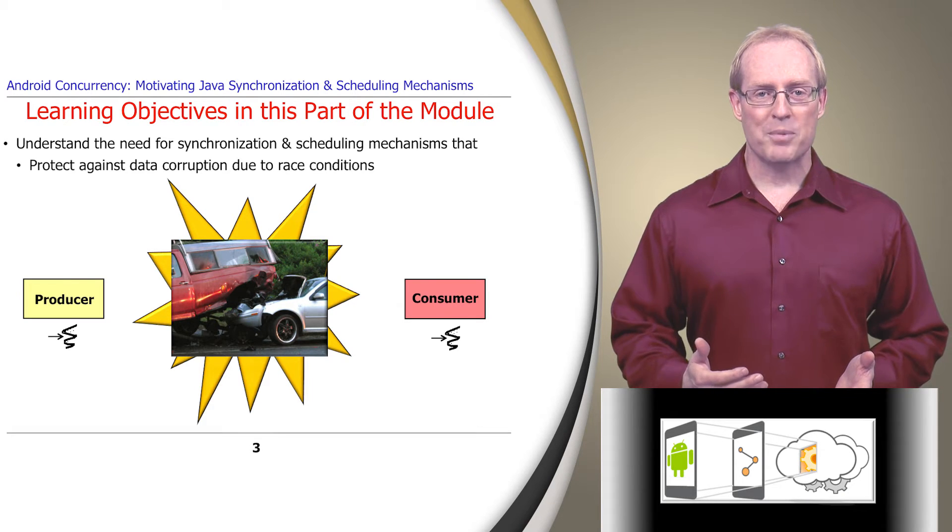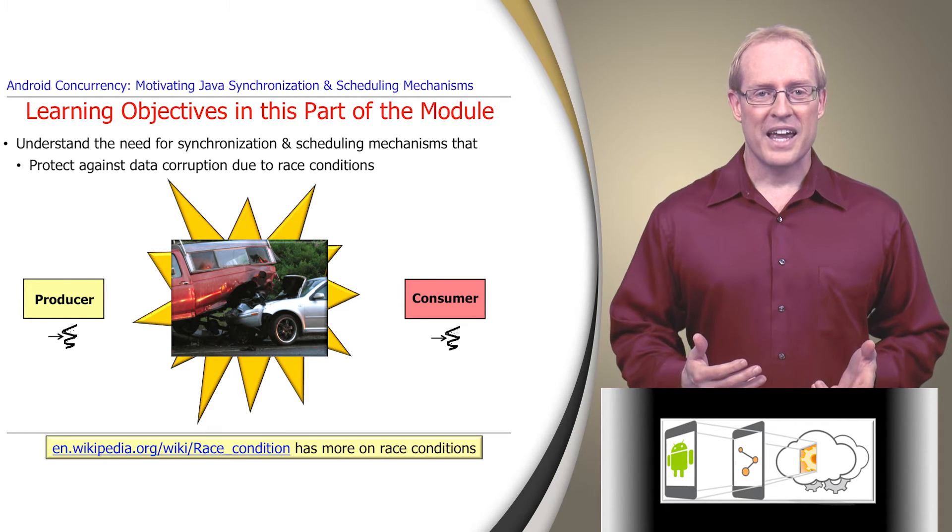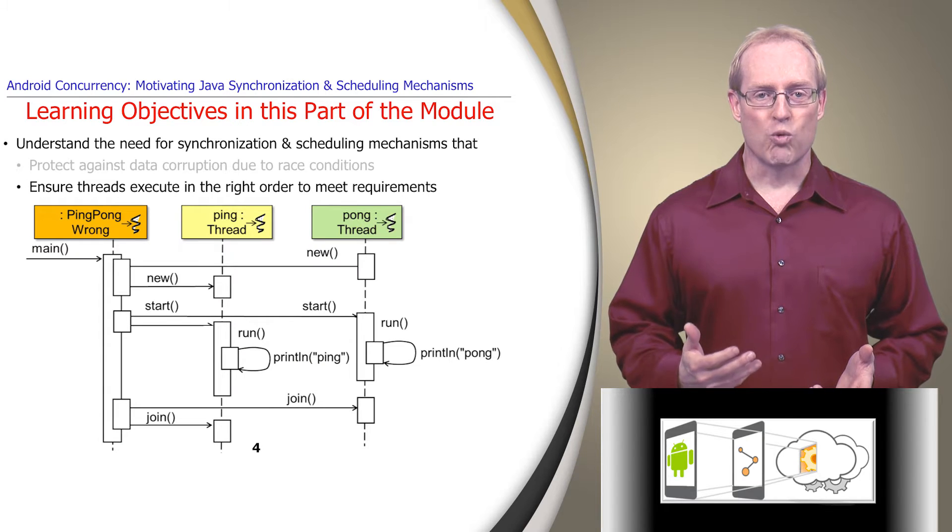Race conditions arise when an application depends on the sequence or timing of processes or threads for it to operate properly, as described in this link, and ensure that threads execute in the right order to meet their synchronization and scheduling requirements.